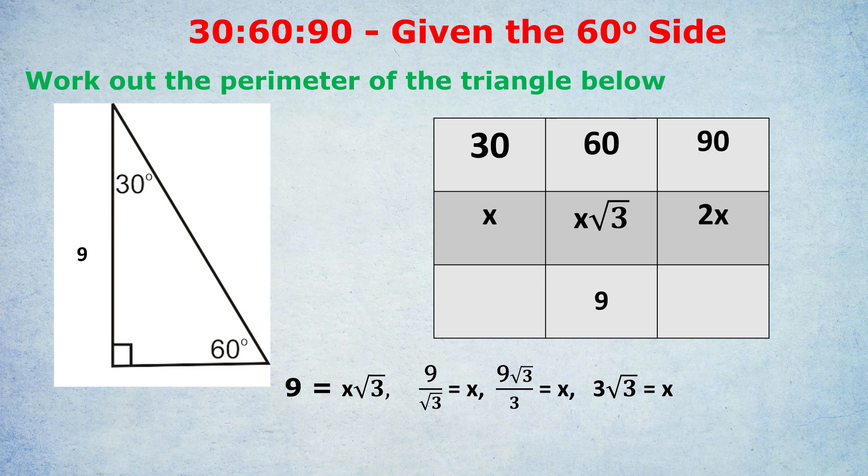9 = x√3. Divide both sides by √3: 9/√3 = x. Multiply top and bottom by √3: 9√3/3 = x. And 9 divided by 3 is 3, so 3√3 = x. You can see with practice it actually doesn't become that hard. It gets easier and easier to complete. If we know x is 3√3, we can cheekily fill in the rest of our box. x is 3√3, 2x is 6√3.